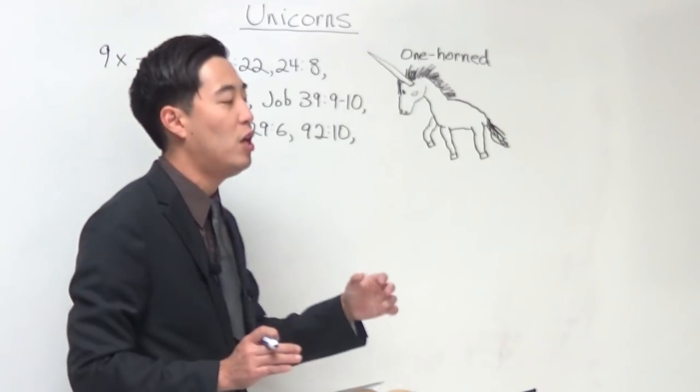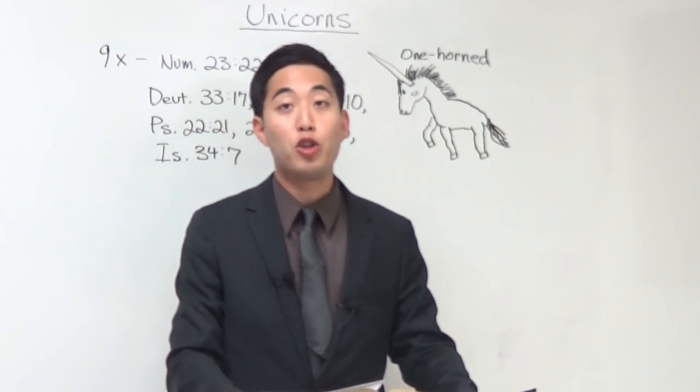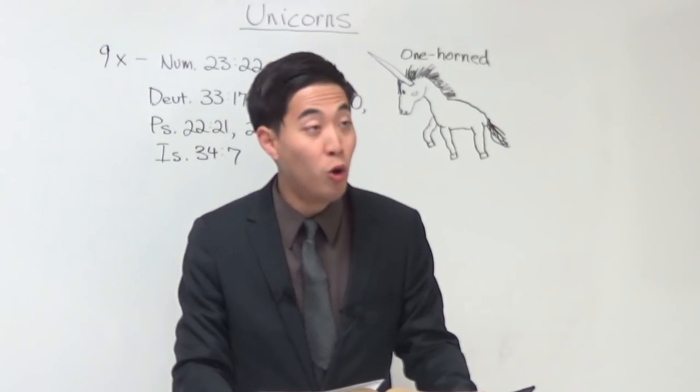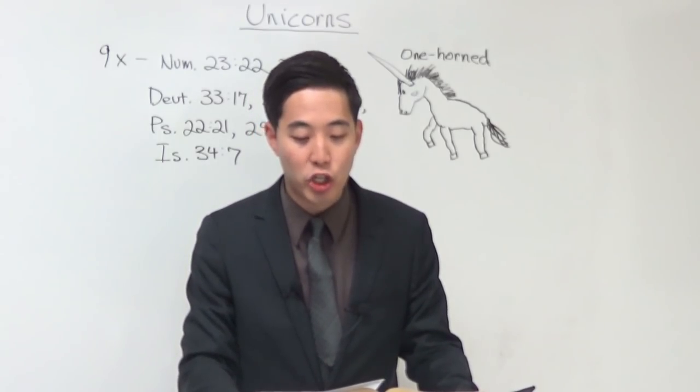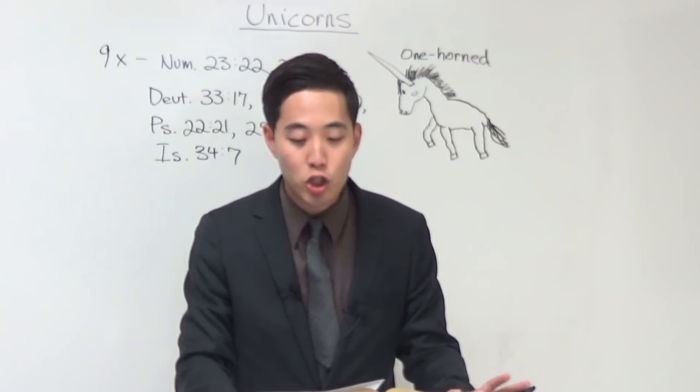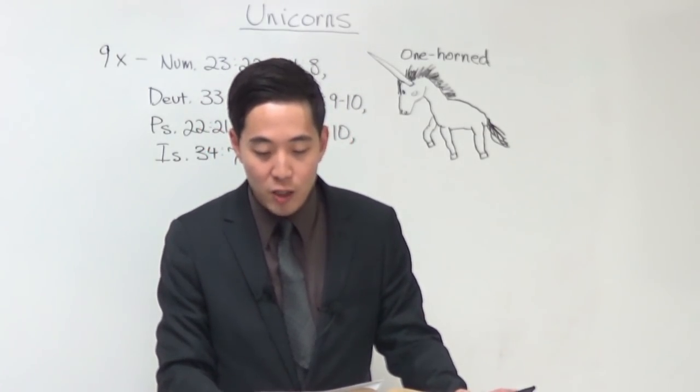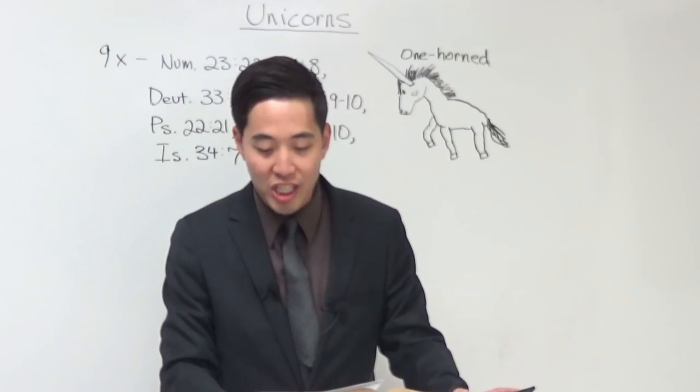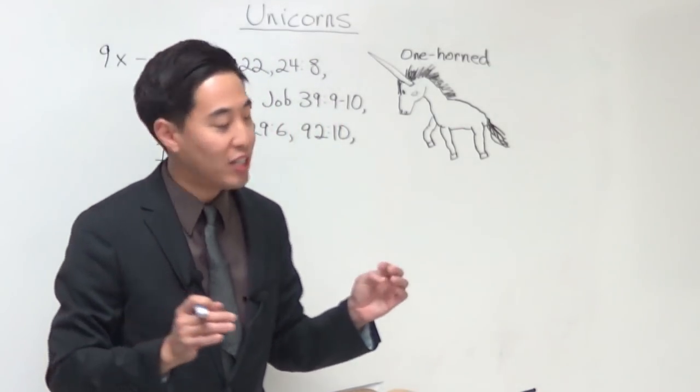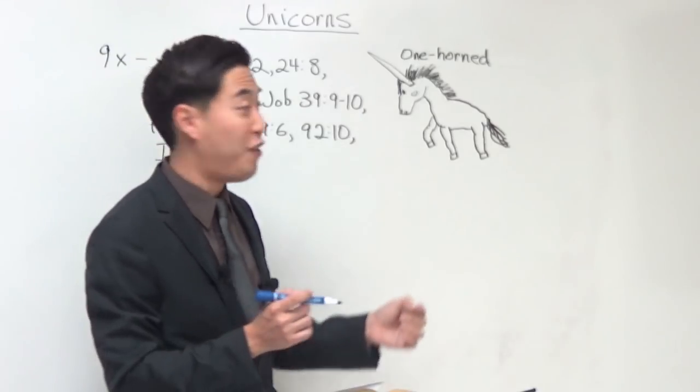But not only that, you've got so many ancient authors like Tessius, Strabo, Pliny the Younger, Alien, and Cosmos Indicoplustes, where they mentioned and claimed they saw this type of unicorn figure.